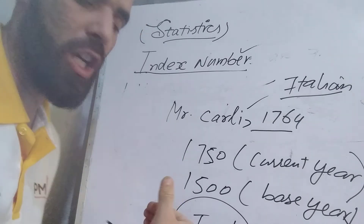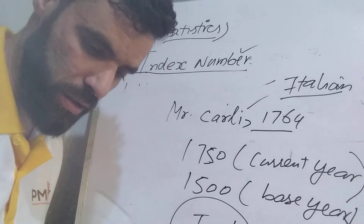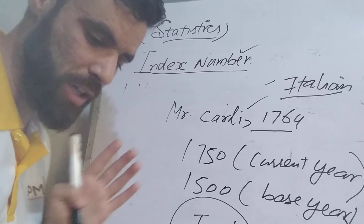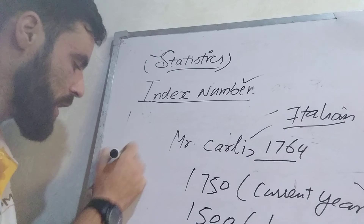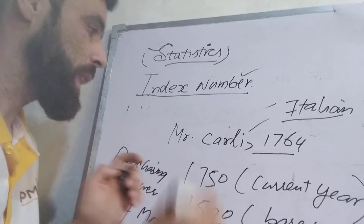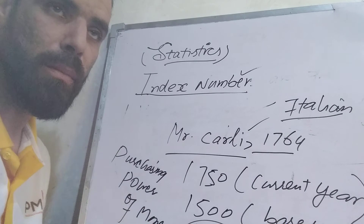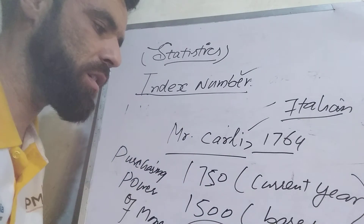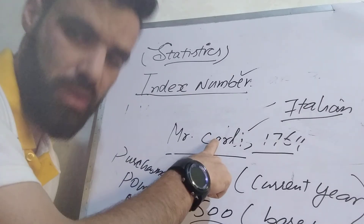Presently there is globalization — if any change takes place in any part of the globe, we can see the effect in other places as well. Originally, the general price level was studied according to the purchasing power of money. Whenever we talk about index numbers, we compare the prices of the base year and current year, and we can observe the price level and inflation rate, and calculate the purchasing power of money.